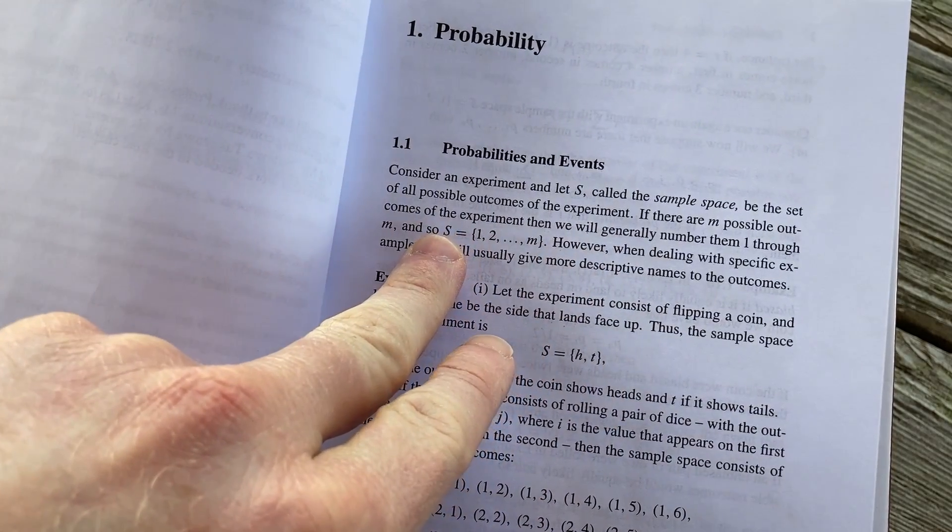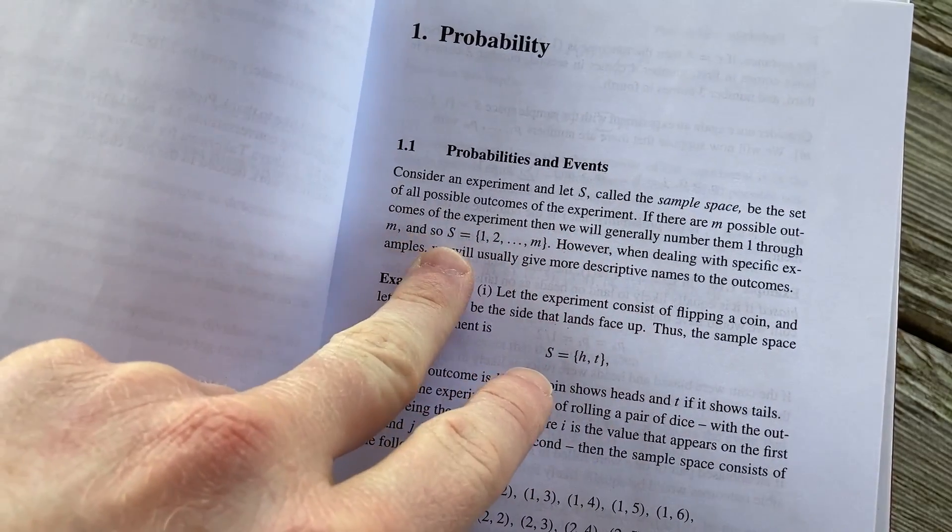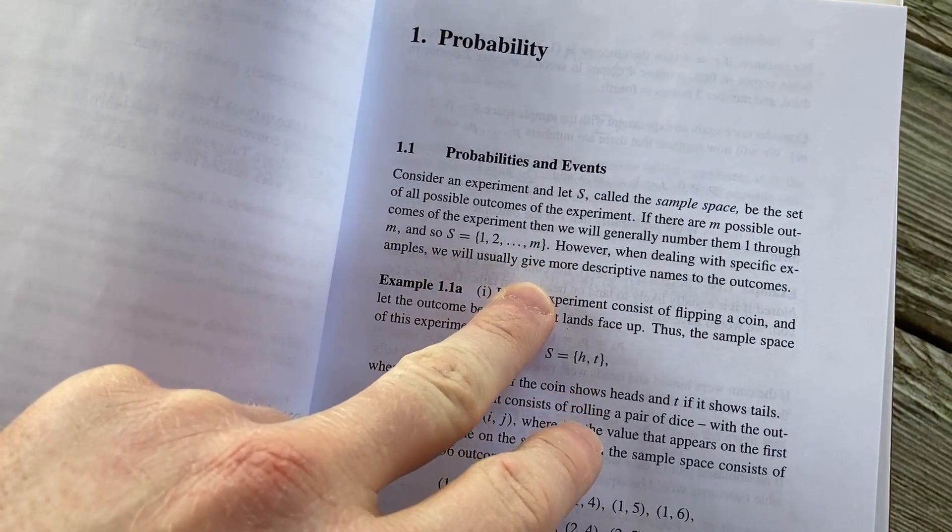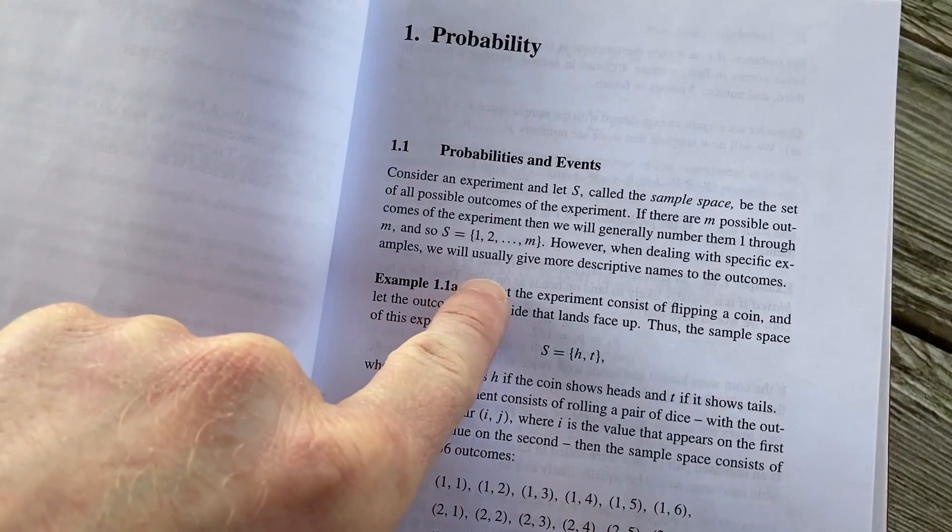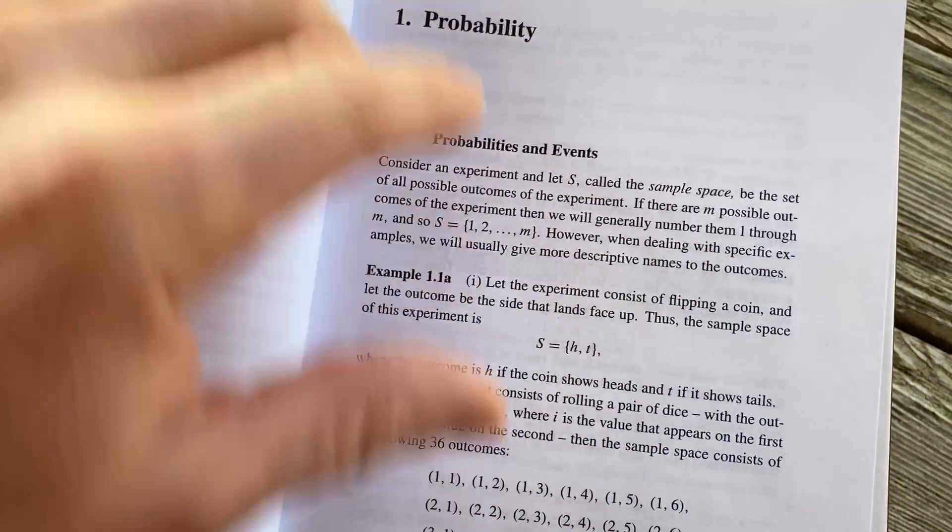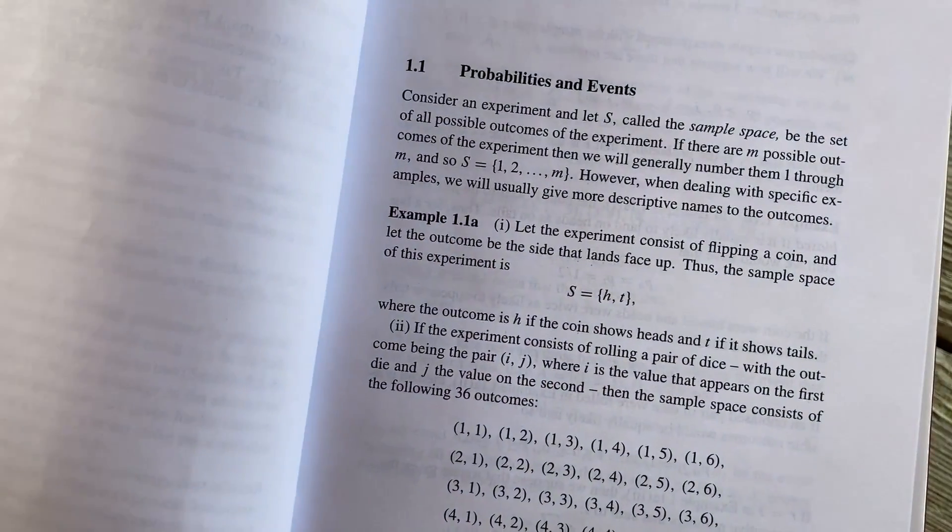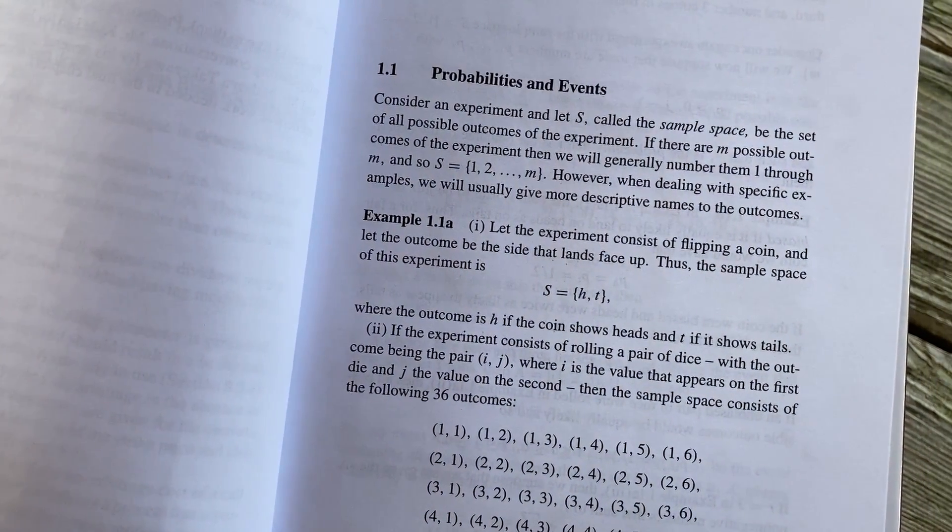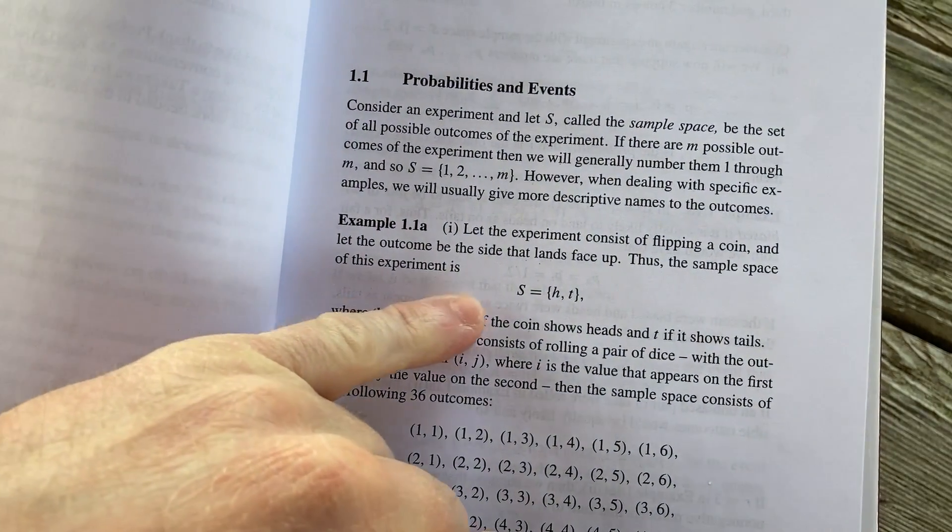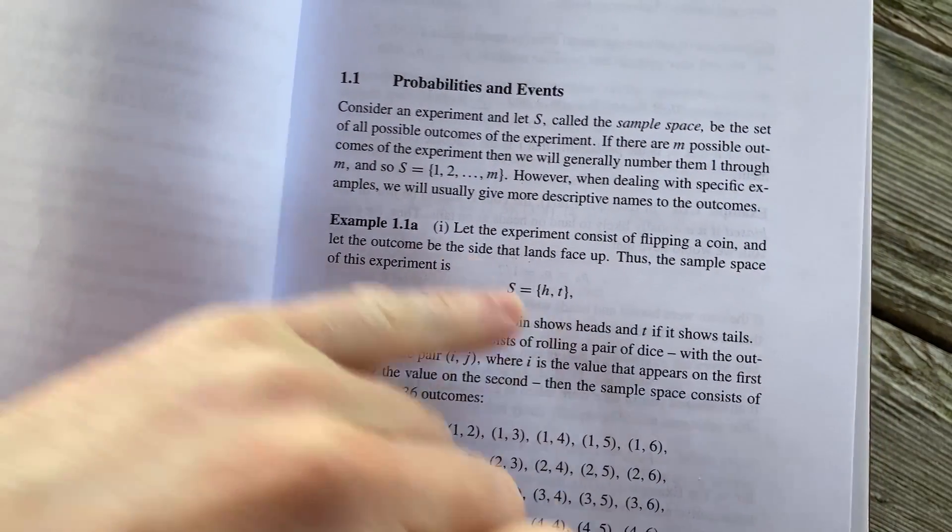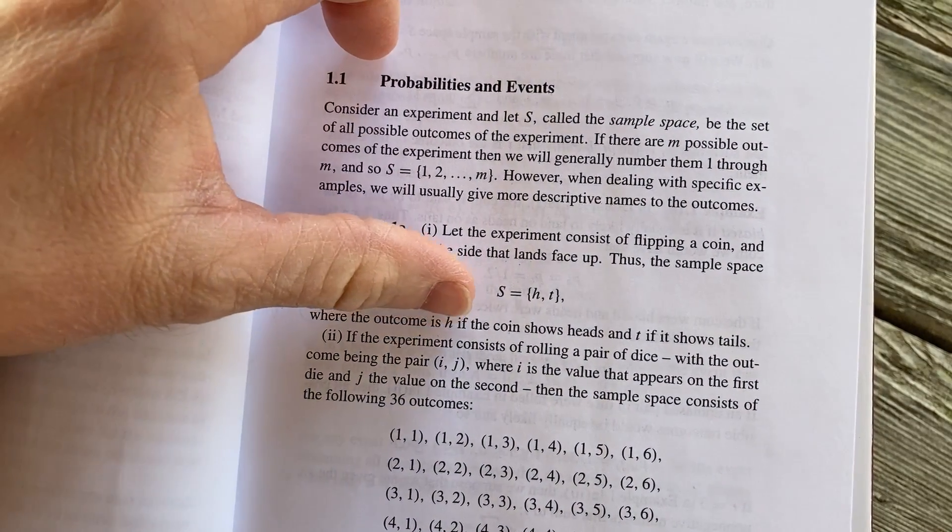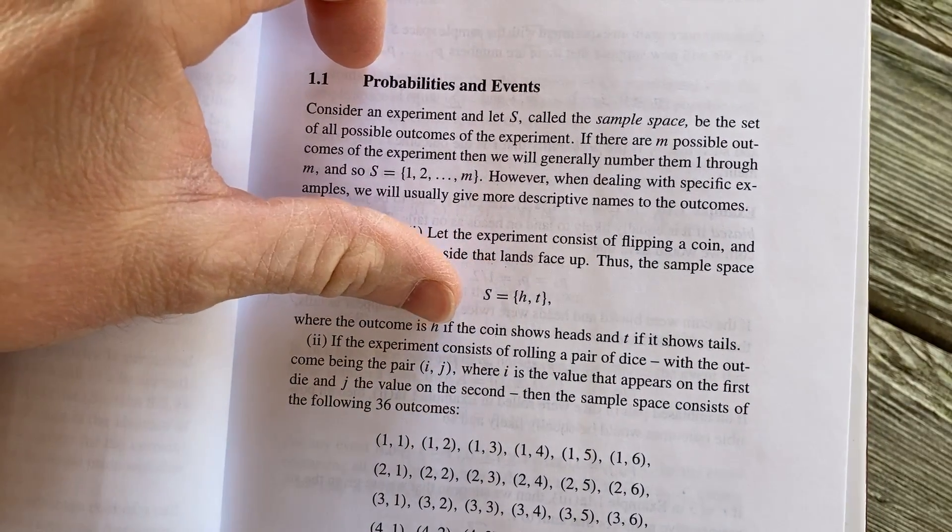If there are m possible outcomes of the experiment, then we will generally number them from one through m. And so S is equal to the set, right, containing the numbers one through m. However, when dealing with specific examples, we will usually give more descriptive names to the outcomes. Yeah, it makes it a little bit more interesting. Here's a simple one, just a flipping a coin. Let the experiment consist of flipping a coin and let the outcome be the side that lands face up. Thus, the sample space of this experiment is S equals, so H represents heads and T represents tails. Where the outcome is H if the coin shows heads, and T if it shows tails.